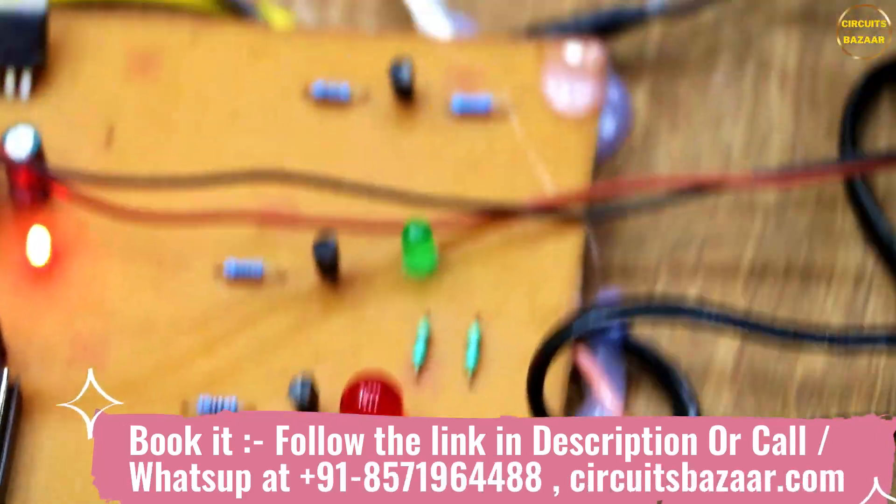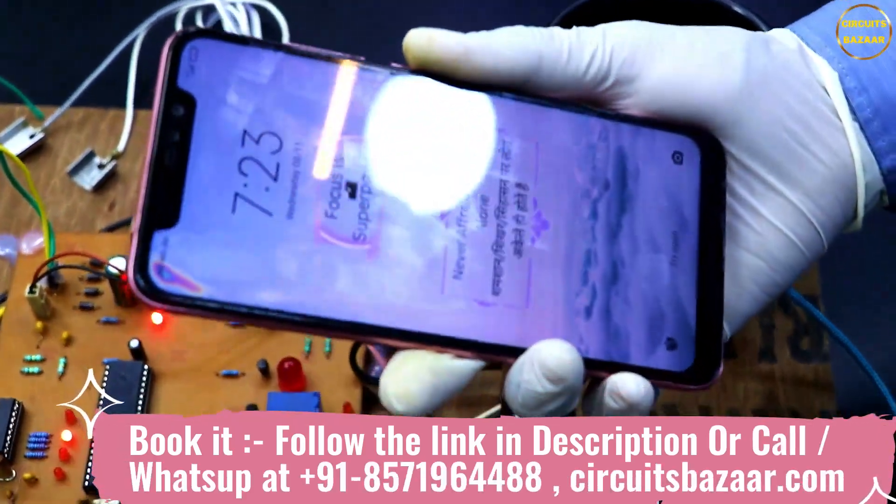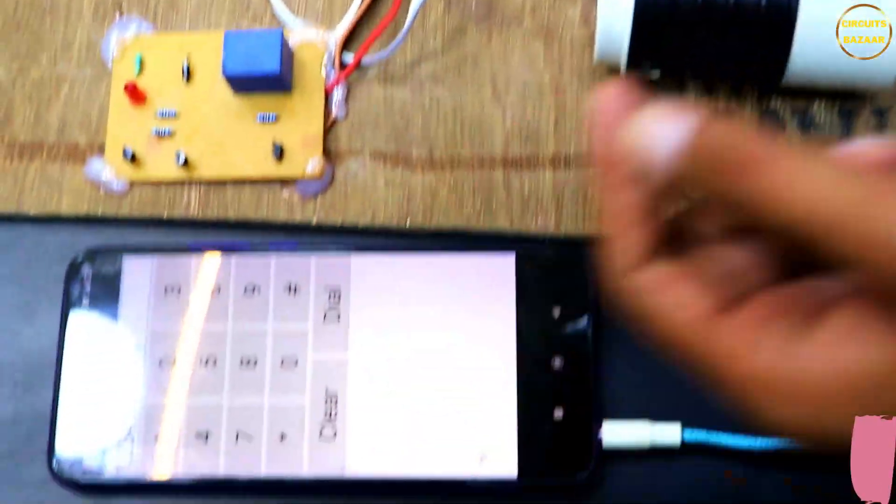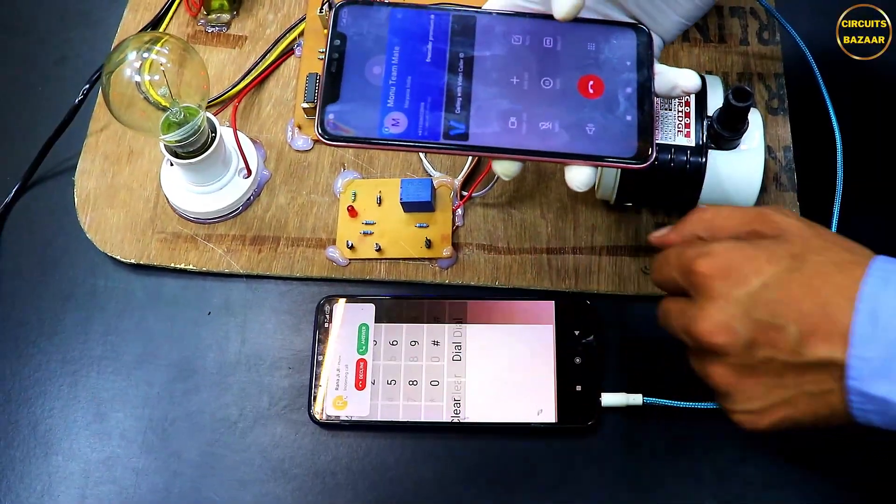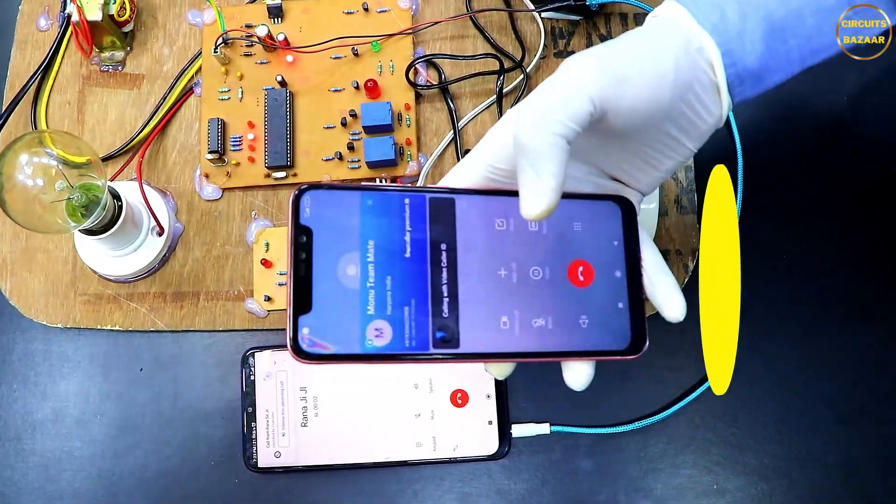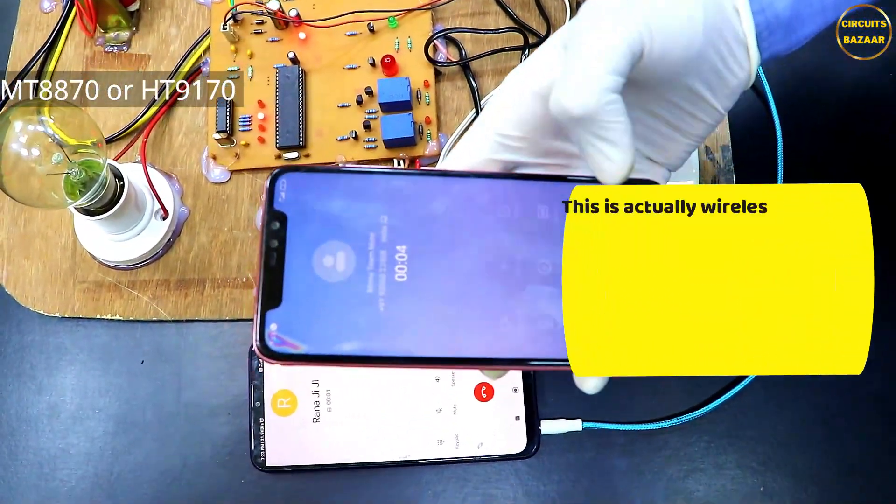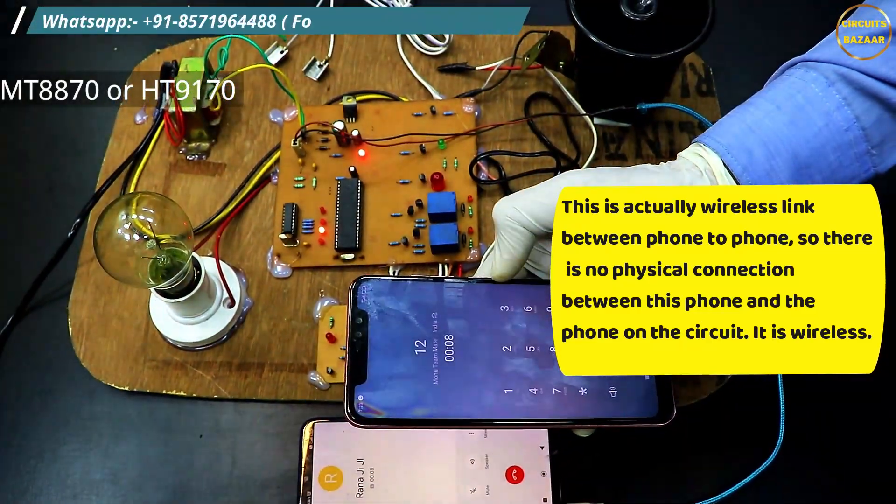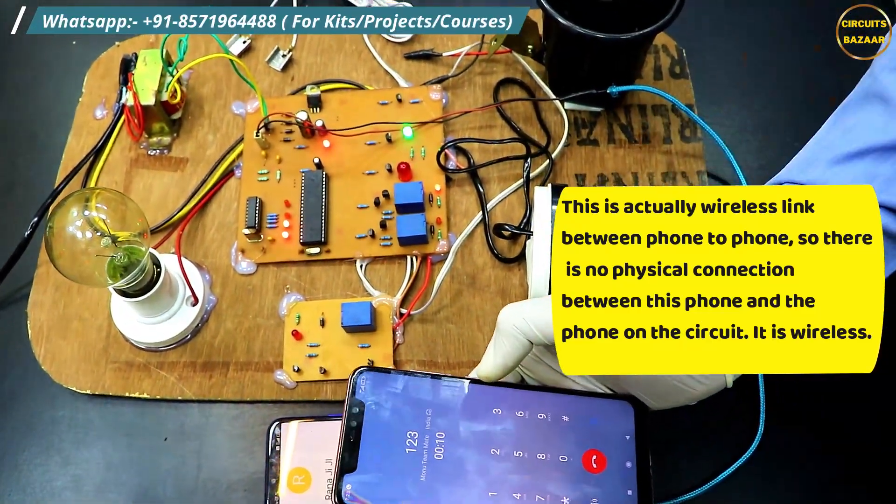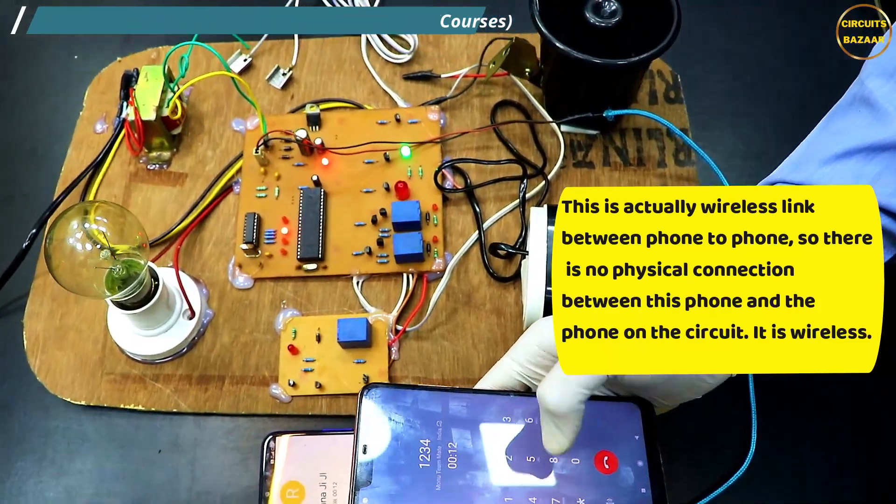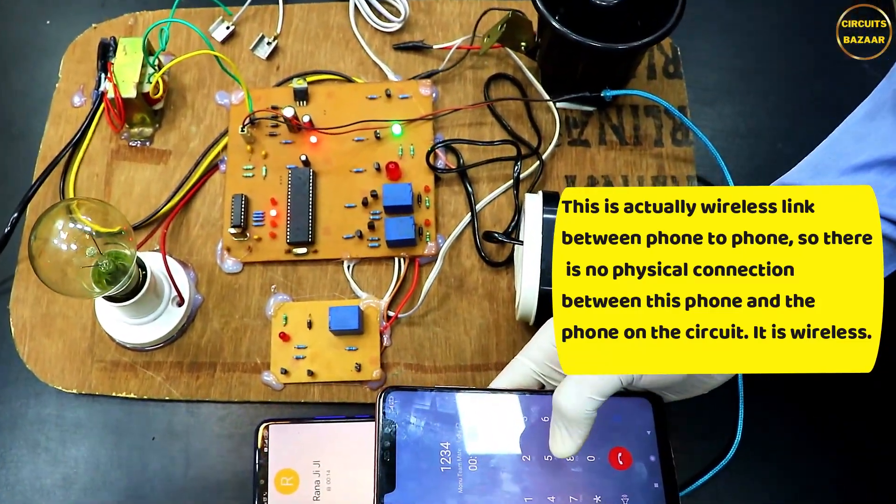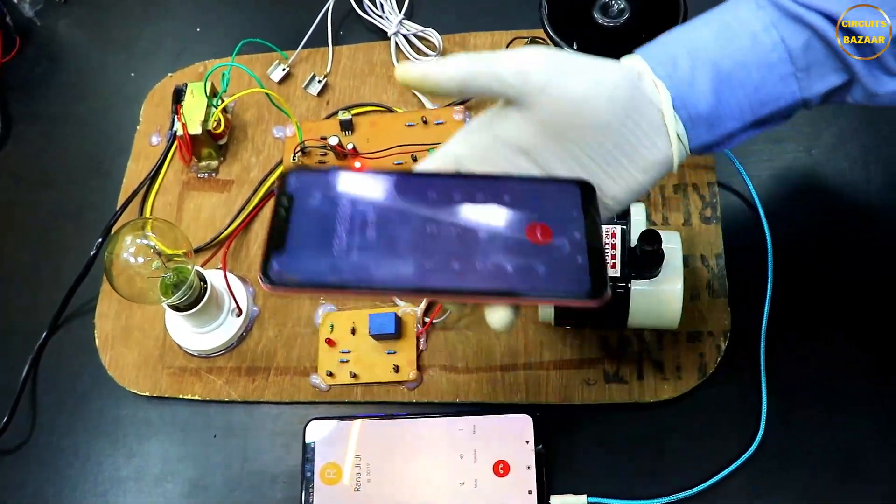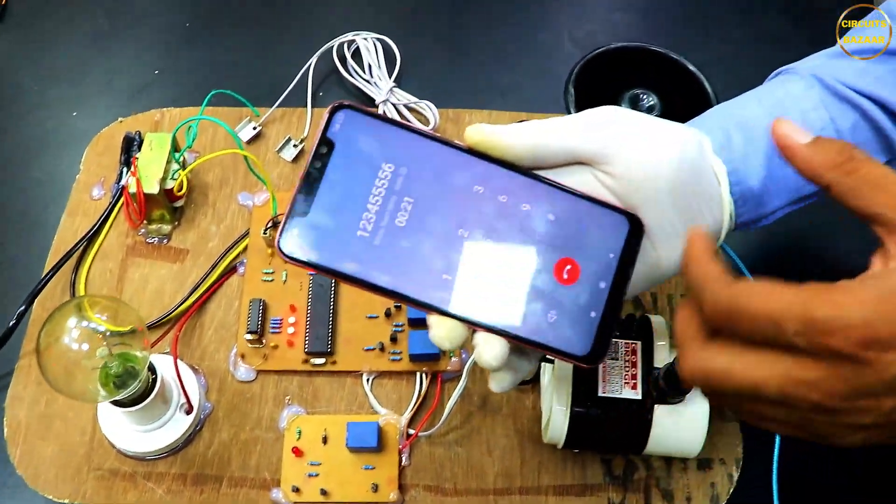Now let me show you the wireless operation. In the wireless operation I can use this mobile phone and I need to make a call on this number. Now you can see that by pressing 1, let me open the keypad. If I press 1, bulb is on. If I press 2, bulb is off. If I press 3, motor is on. If I press 4, motor would be off. If I press 5, the hooter will be on. If I press 6, hooter would be off.